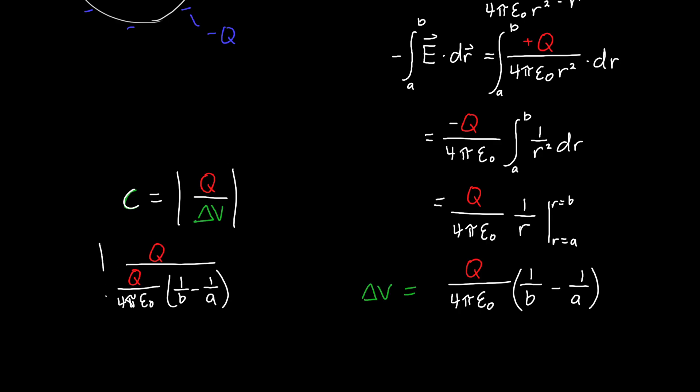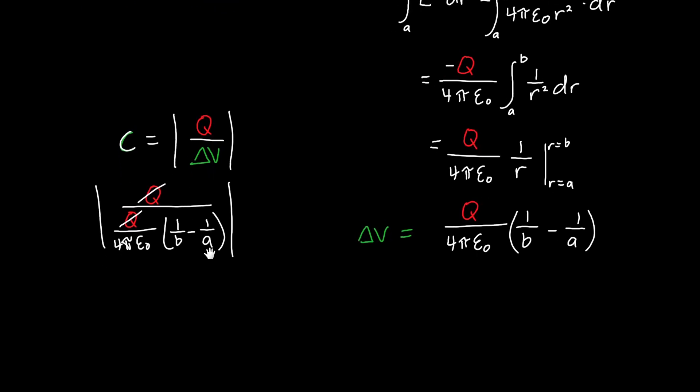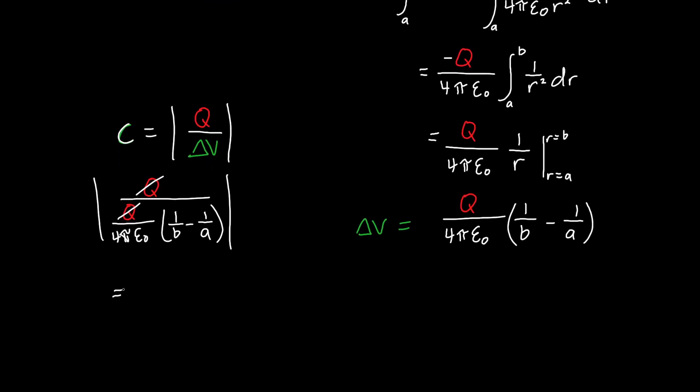The Q's cancel out. The 4π epsilon naught will get flipped up to the top, and we'll end up with 4π epsilon naught divided by 1 over B minus 1 over A. This is our answer.